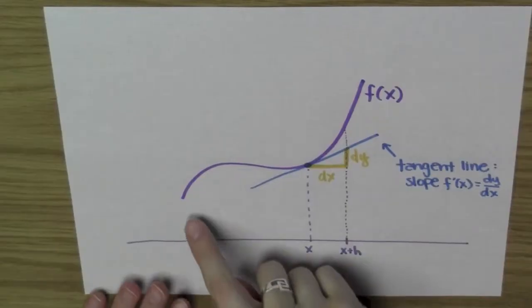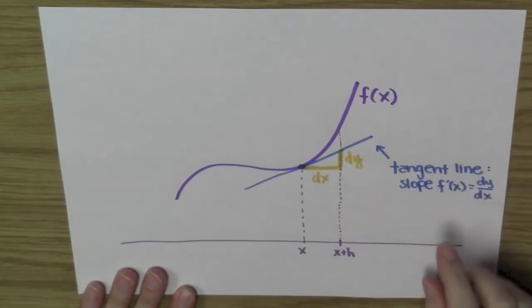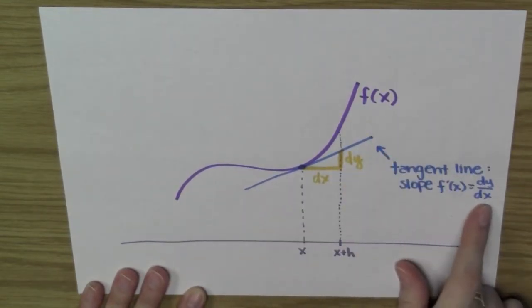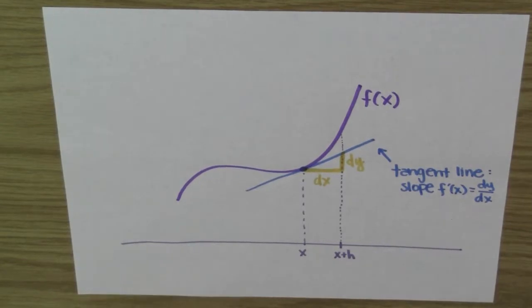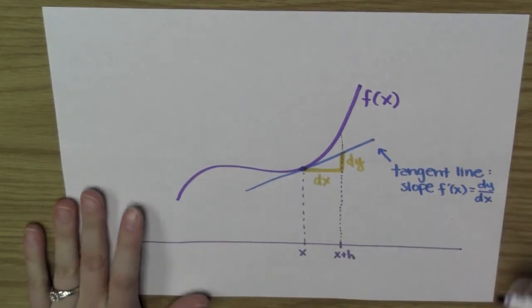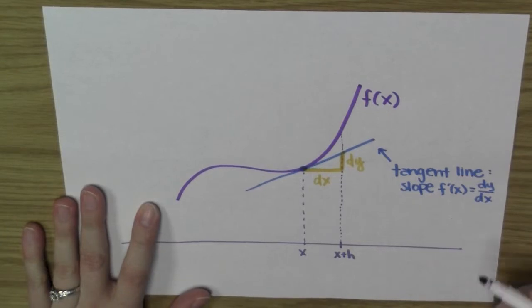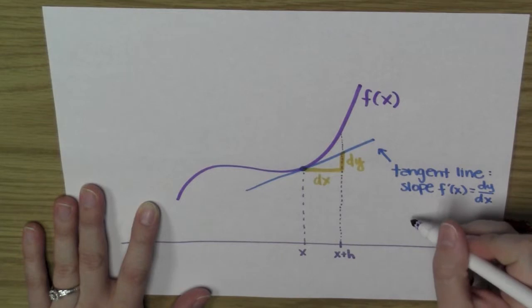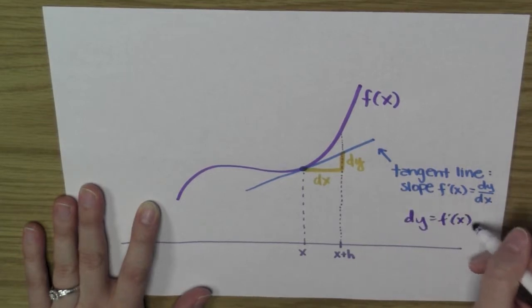Here we have the graph of some function f, and we've drawn the tangent line, which has slope f' is equal to dy/dx. And so we've seen before that what we're actually going to do here is essentially multiply both sides by dx, which is a little bit weird. But the way we think about this is really as dy equals f' times dx.